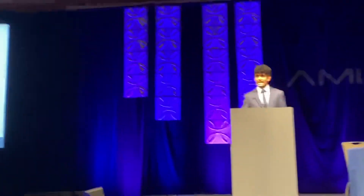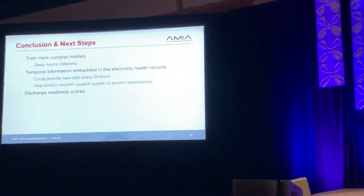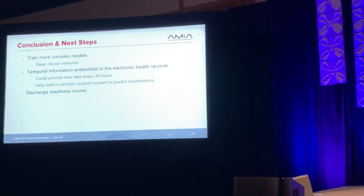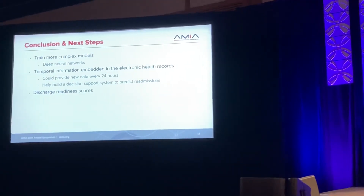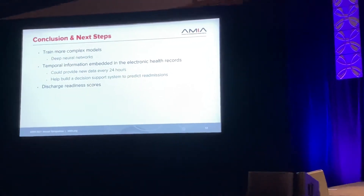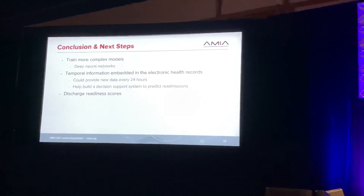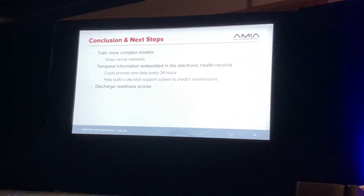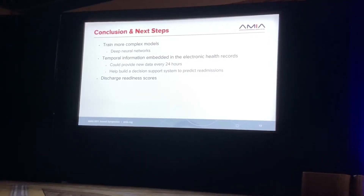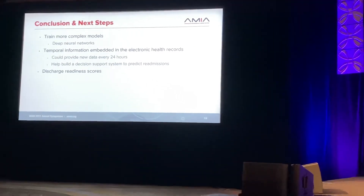There are some next steps to improve this research. One is to train more complex models like deep neural networks. The main challenge was a high number of features — 83 — and a low number of observations — just 338. Deep learning neural networks with multiple layers can help address this. The second step is to embed temporal information into the electronic health records, providing new data every 24 hours to build a decision support system to predict readmissions.